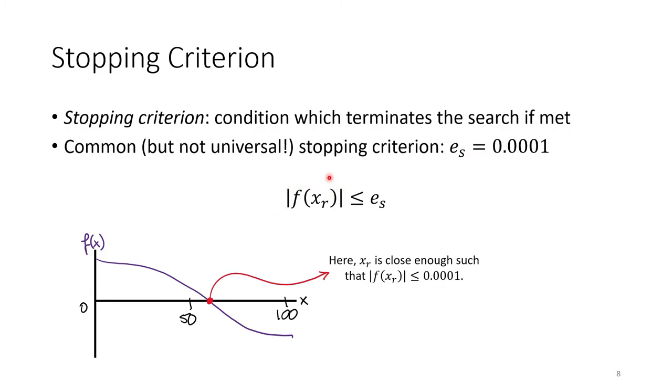After every iteration, we evaluate the absolute value of f. If it's less than or equal to our stopping criterion, we can stop the search. You might see in some problems that the stopping criterion is somewhere around 0.0001. This means that the function evaluated at the estimated root must be less than or equal to 0.0001, which is pretty darn close enough to 0 for our purposes.